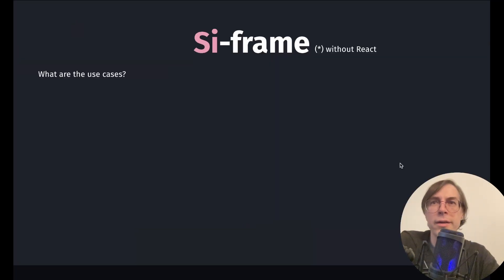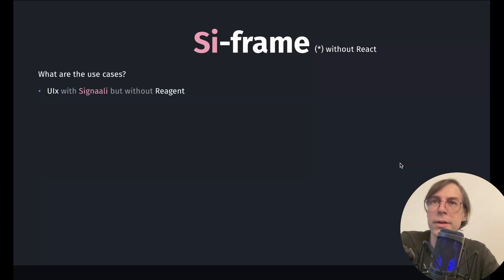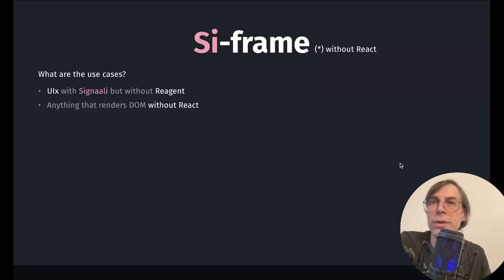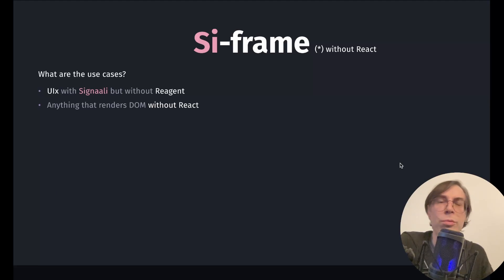So, what can C-Frame be used for? What are the use cases? UIx apps can use it to manage their state without Reagent. It can be useful if the app has no legacy code which is using Reagent components. But it can also be used by any other library that updates the DOM — and not only React — provided that it knows how to update the DOM when a Signali node is updated.